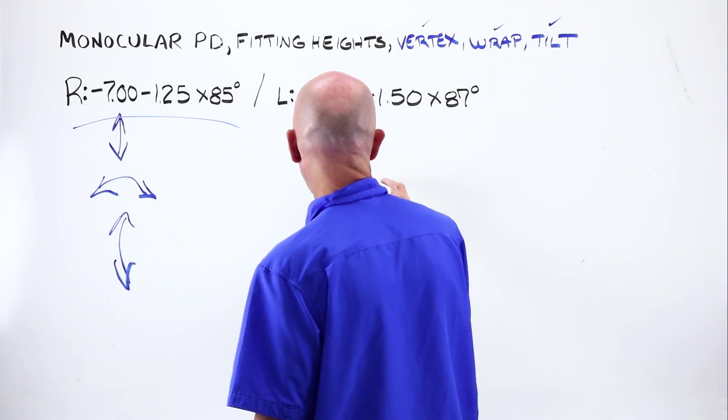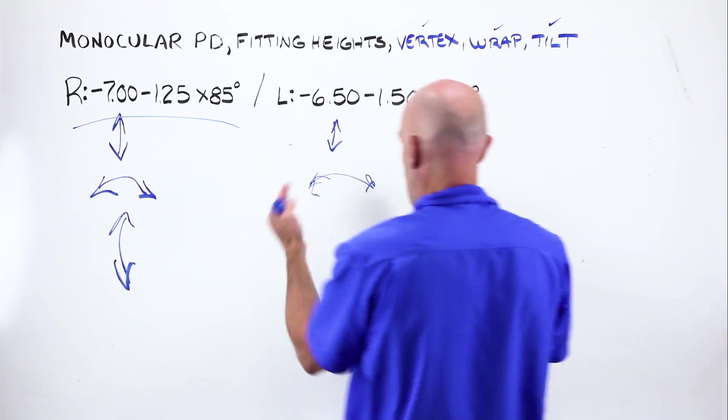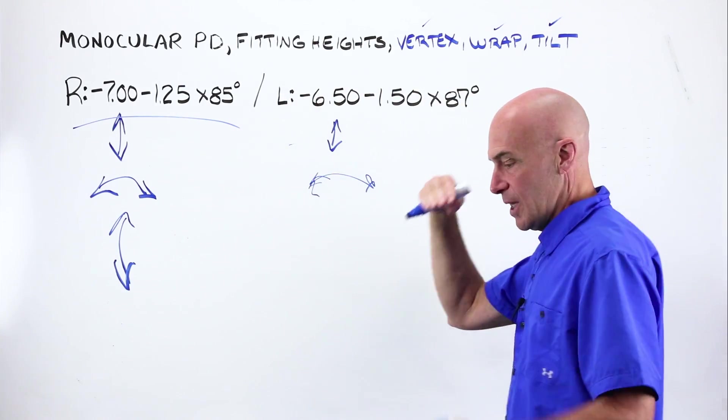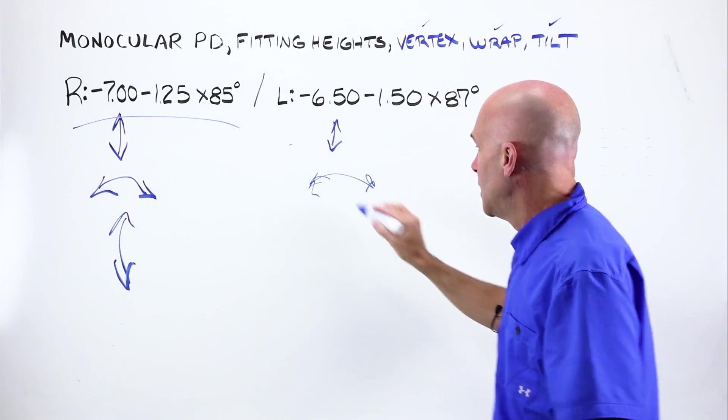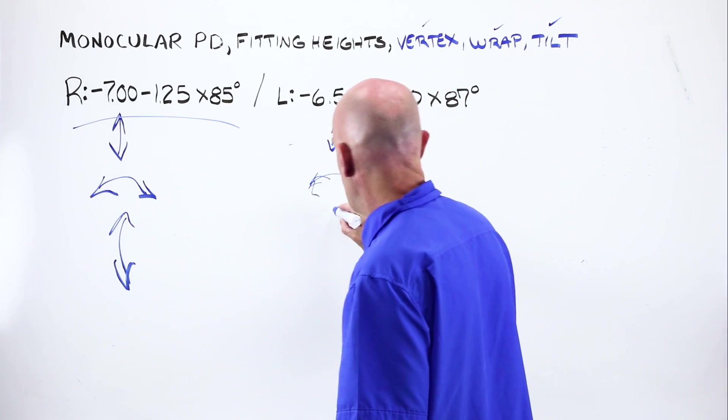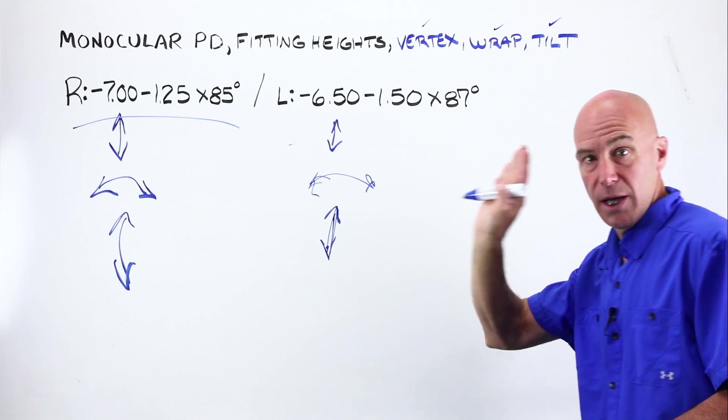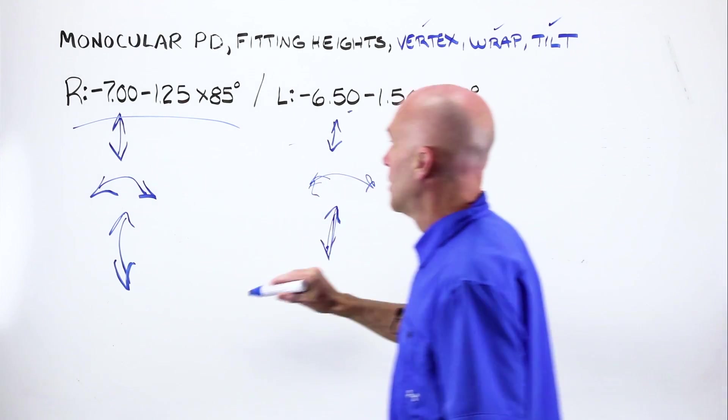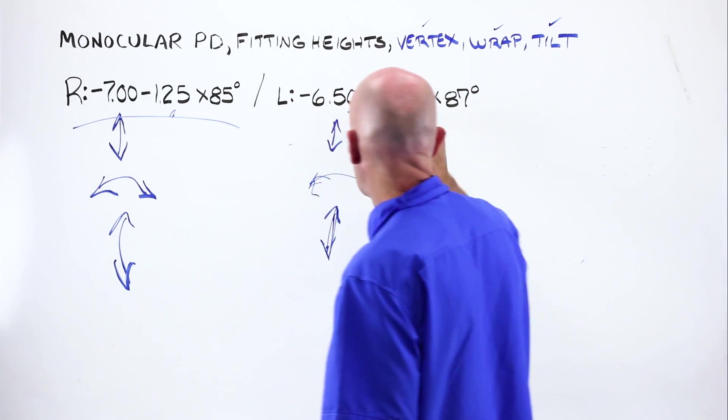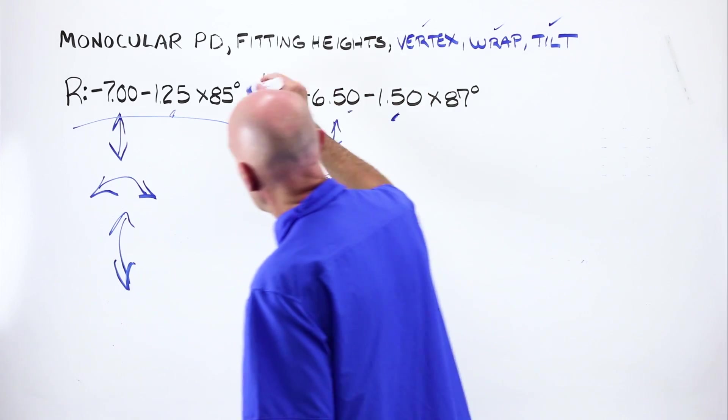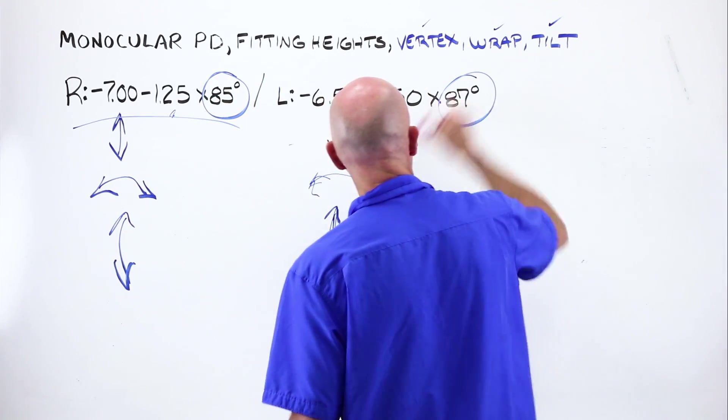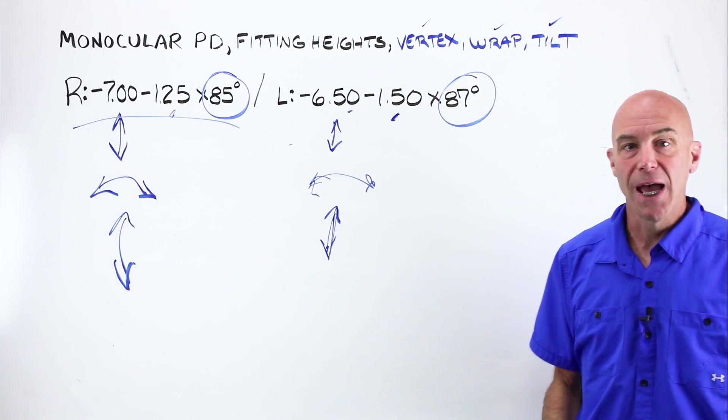If I tilt the lens along the wrap, the 180 looking above, it's going to change the power. If I tilt the lens, my panto retro this way, it's going to change the power. It will even alter the perceived position of the axis.